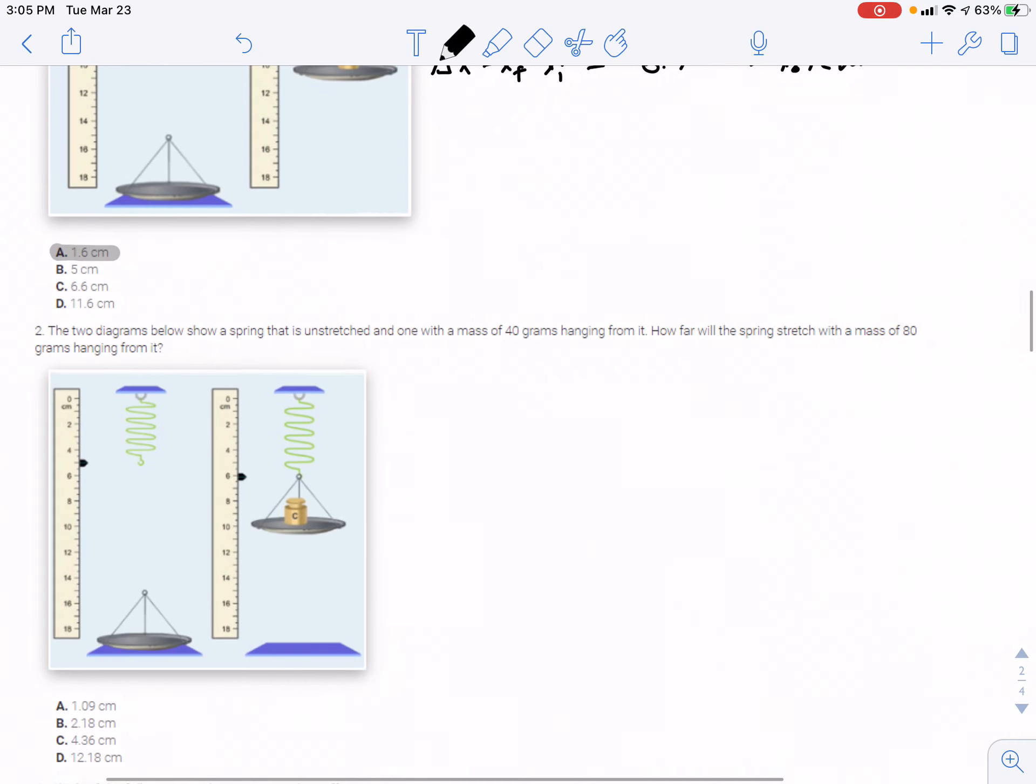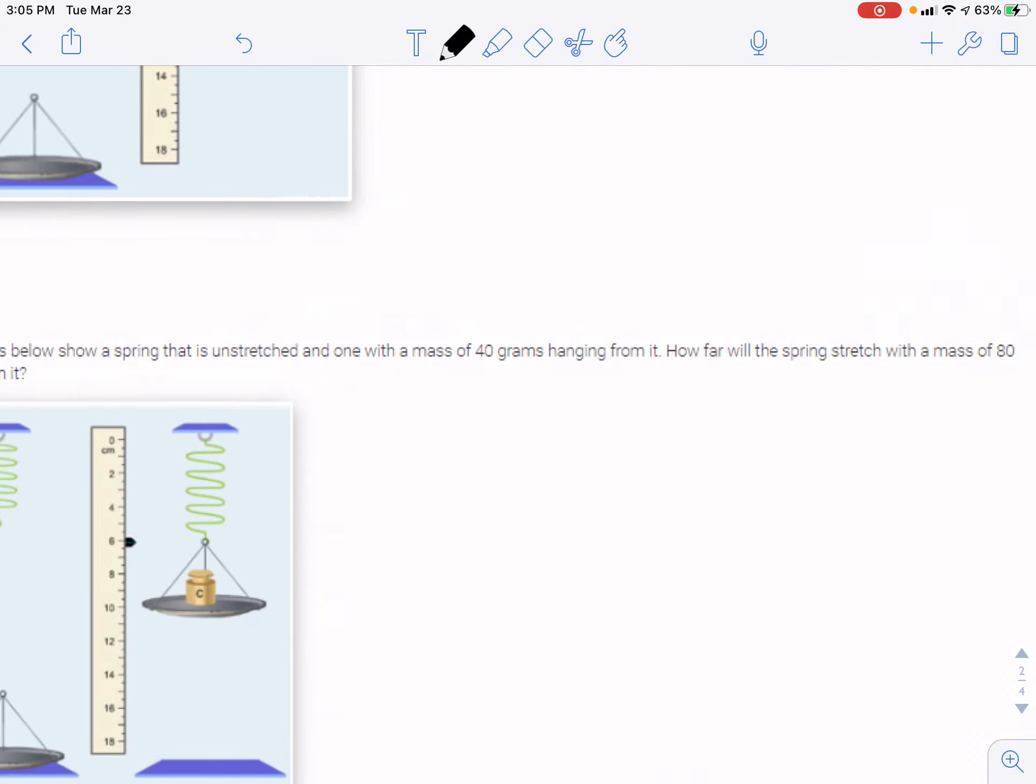Number two. The two diagrams below show a spring that is unstretched and one with a mass of 40 grams hanging from it. How far will the spring stretch with a mass of 80 grams hanging from it? Well, it does deal with displacement concepts, but it goes deeper than just displacement. The question asks, how much will it be displaced with double the mass? This is known as Hooke's Law.